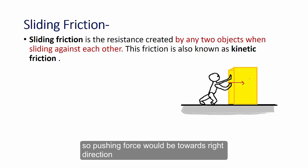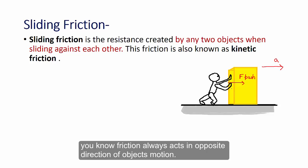So his pushing force would be towards right direction and this box moves to the right direction with acceleration a. You know friction always acts in opposite direction of objects motion.